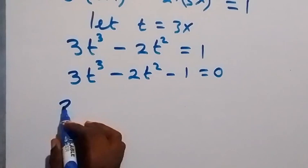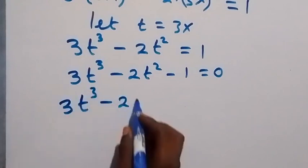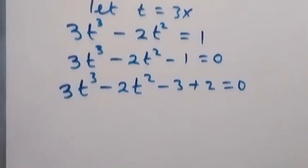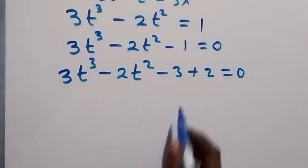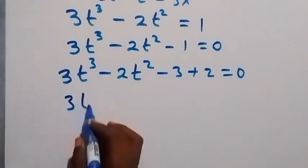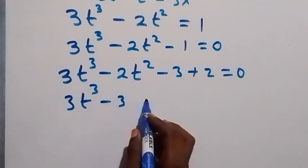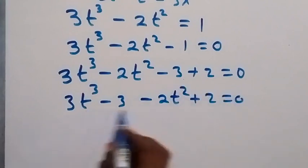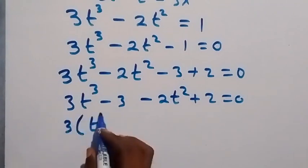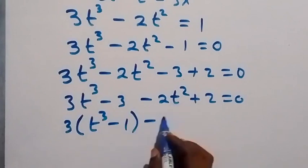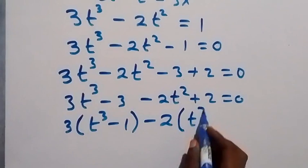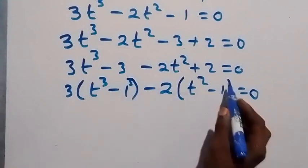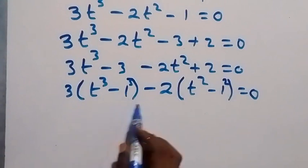We split minus 1 as minus 3 plus 2, so this becomes 3t cubed minus 2t squared minus 3 plus 2 equals 0. We can write 1 as 1 cubed and 1 as 1 squared to apply the difference of cubes and squares.